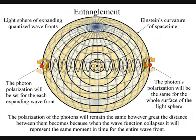The polarization of the light will be the same for the entire surface of the light sphere, creating quantum entanglement and the symmetry and geometry of spacetime.